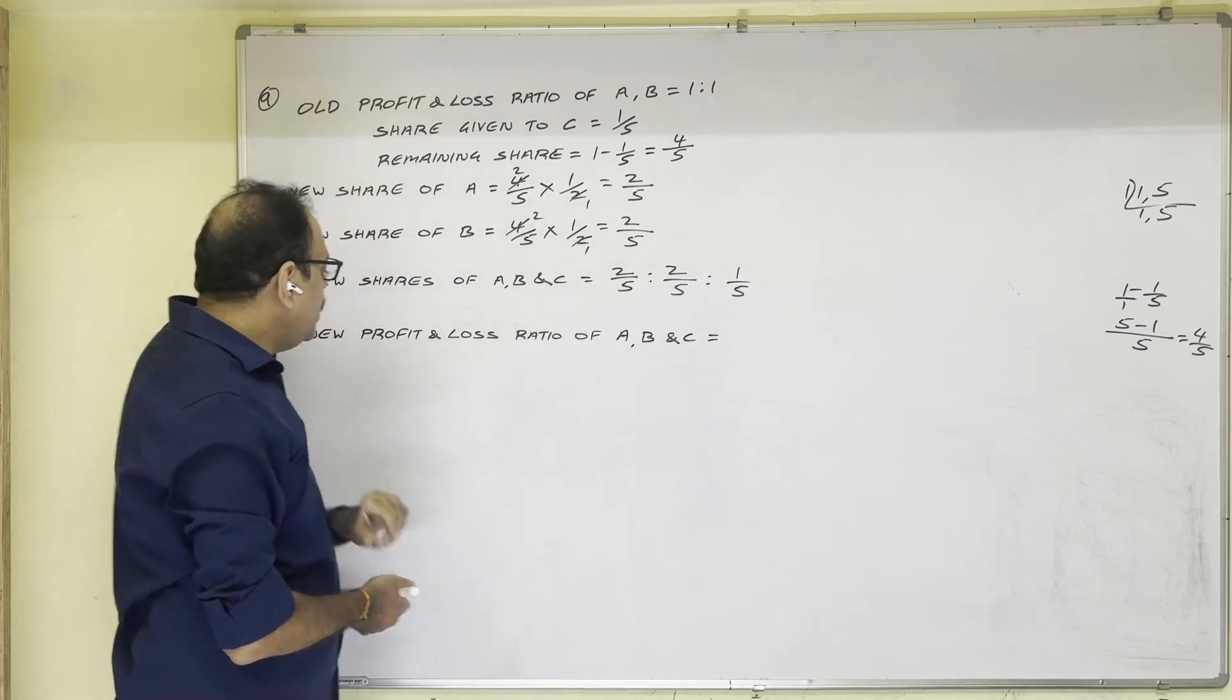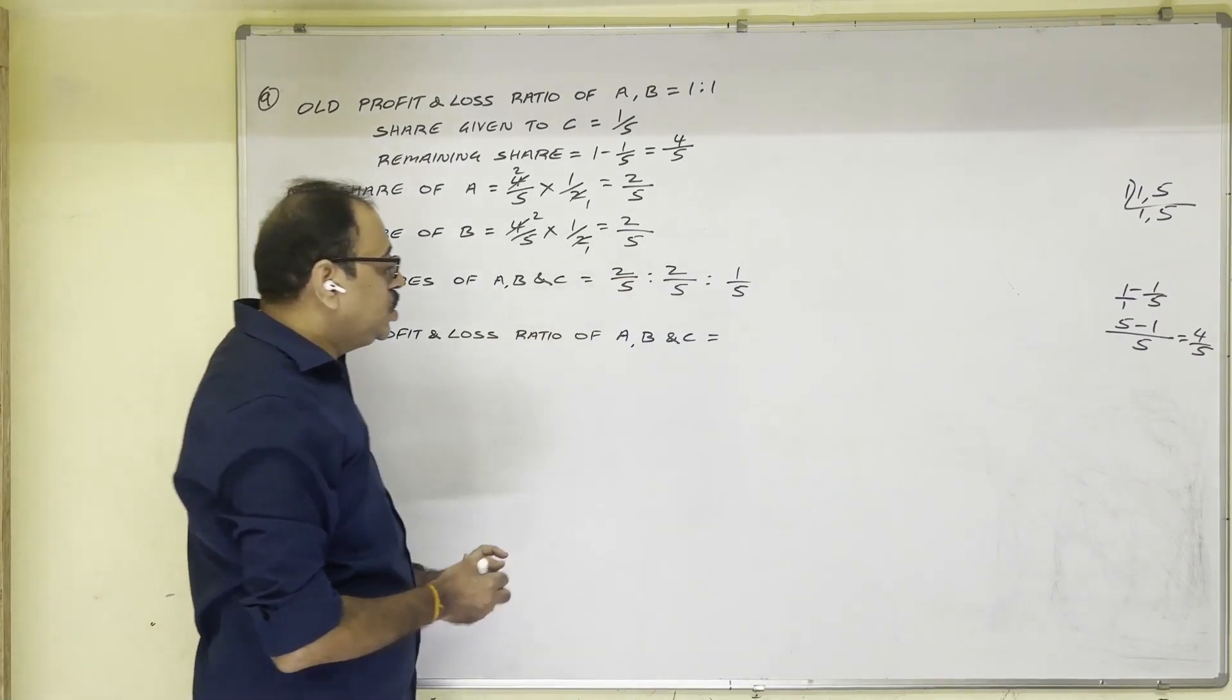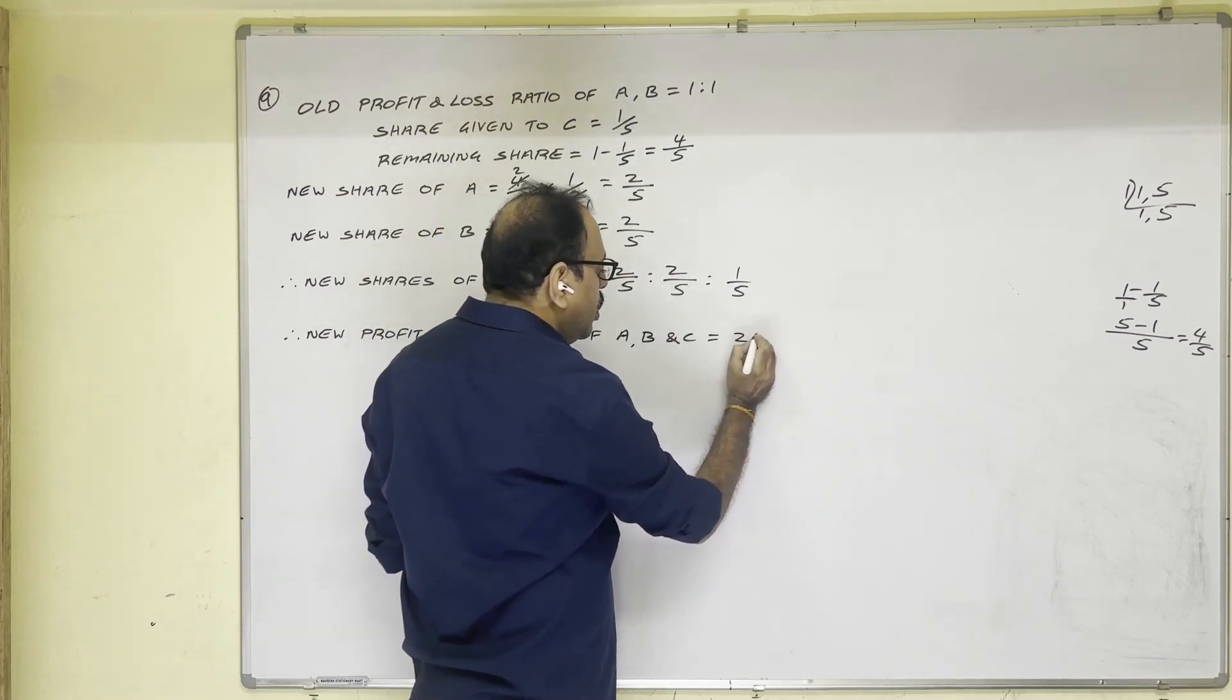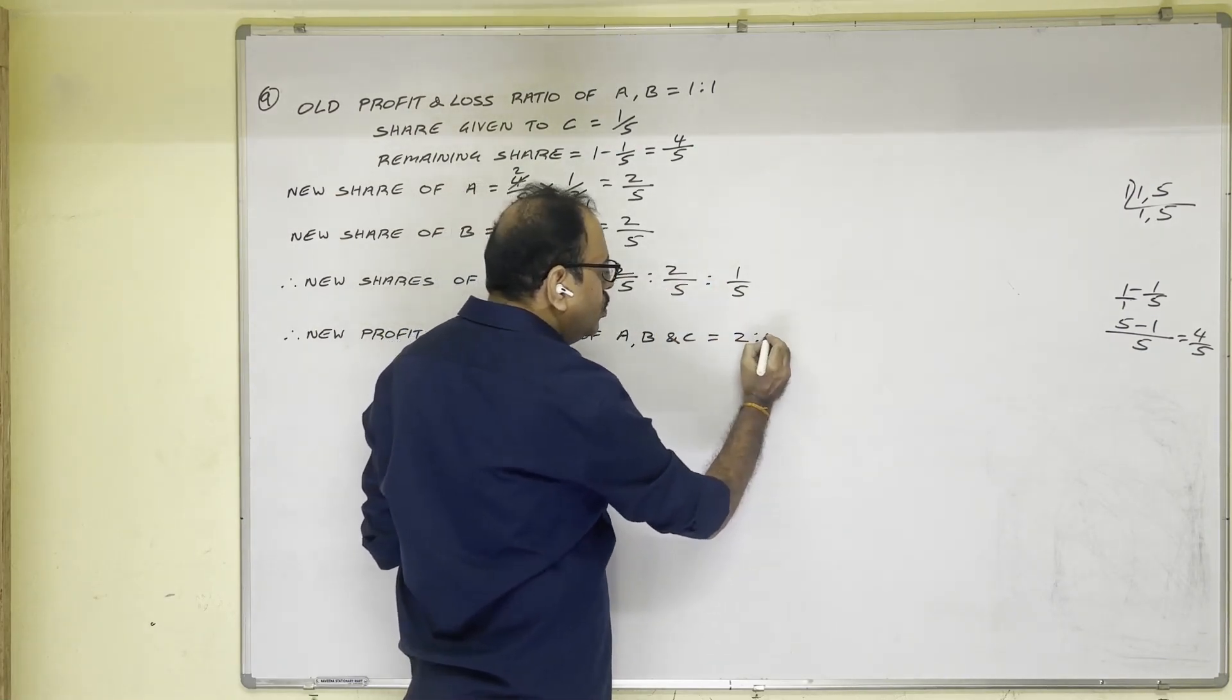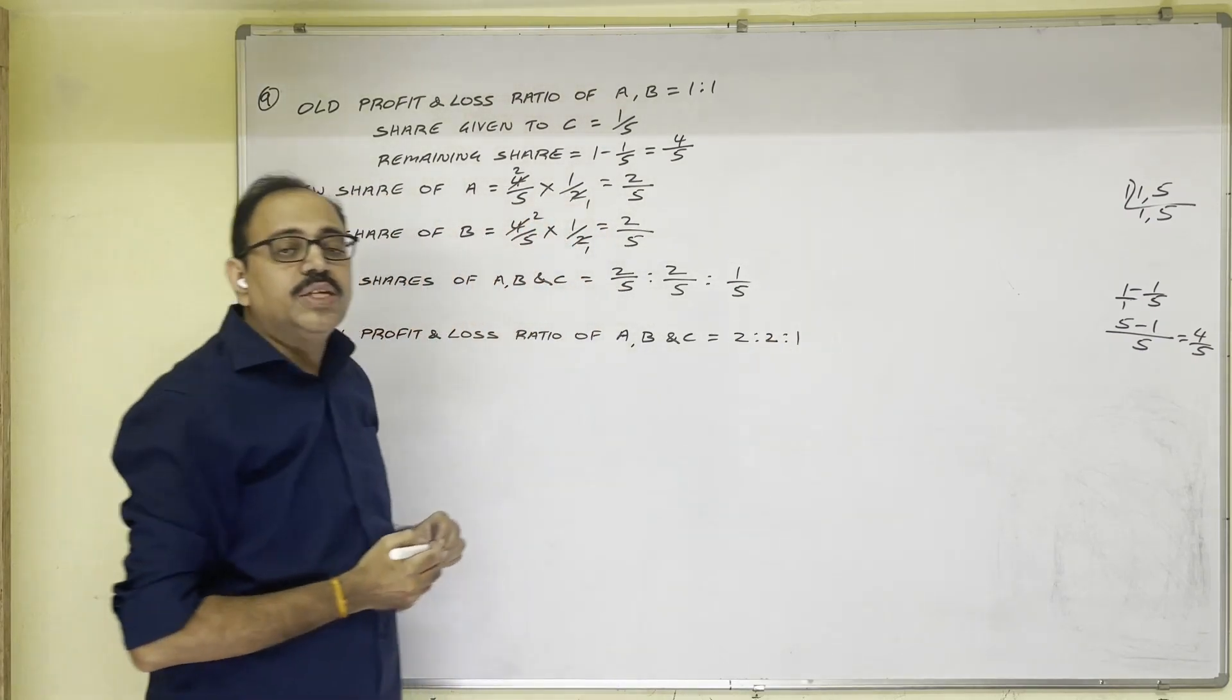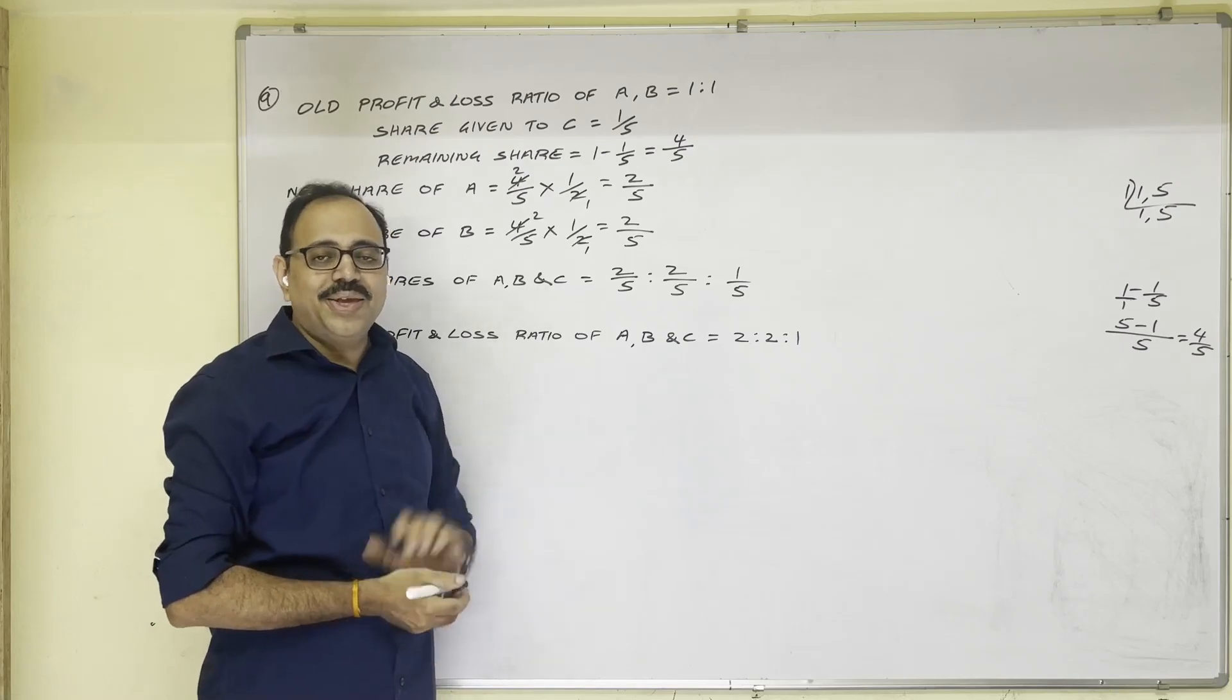Therefore new profit and loss ratio of A, B and C is equal to 2:2:1. So this is the end of present video. Hope this video is helpful to you. Thank you.